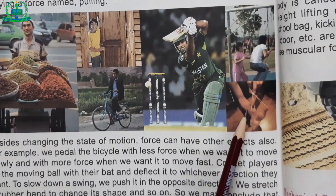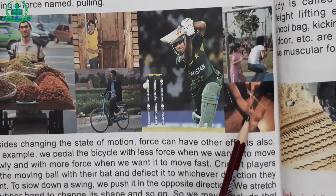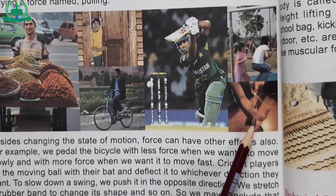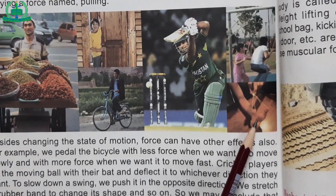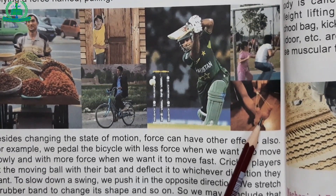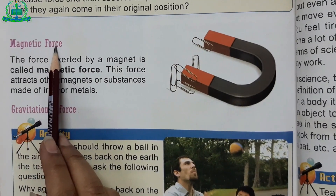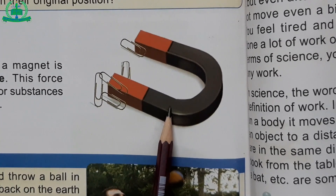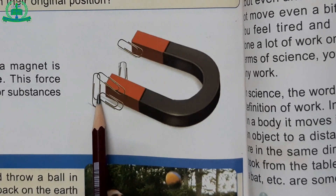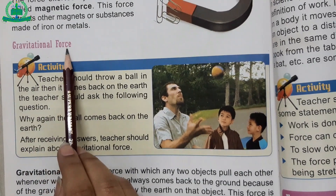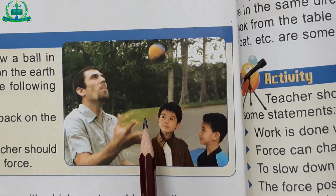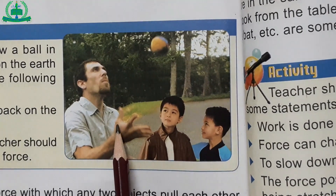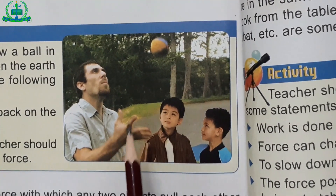Elastic force: if we apply force on a rubber band or an elastic thread, it stretches. When we release it, after some time, it regains its original shape and size. This force possessed by a body that retains its original shape after being stretched is called elastic force. Magnetic force: the force exerted by a magnet is called magnetic force. This force attracts other magnets or substances made of iron or metals. Gravitational force: gravitational force is the force with which any two objects pull each other. Whenever we throw something, it always comes back to the ground because of the gravitational force exerted by the earth on that object. This force is responsible for keeping us bound to the earth.